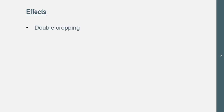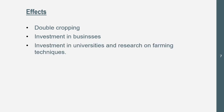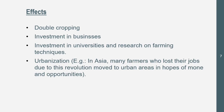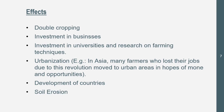There were effects of this third agricultural, aka Green, Revolution. There was double cropping, which we just talked about earlier — growing different crops on a farm. Investment in businesses — farming businesses, businesses in pesticides, seeds, and so on. Investment in universities and research on farming techniques, including research on pesticides and insecticides. We know that these affect human health negatively because of those investments that later went into research. Then urbanization — especially in Asia, many farmers lost their jobs due to this revolution, so they moved to urban areas in hopes of more job opportunities. Development of countries — they're earning money from farms so now they can develop. And then there's soil erosion due to fertilizers being used too much.